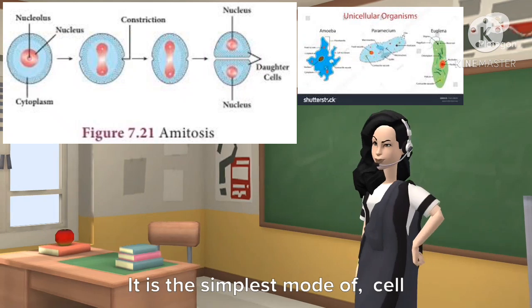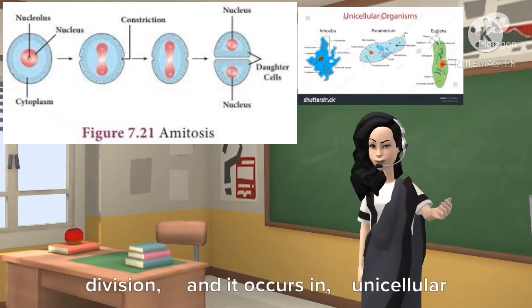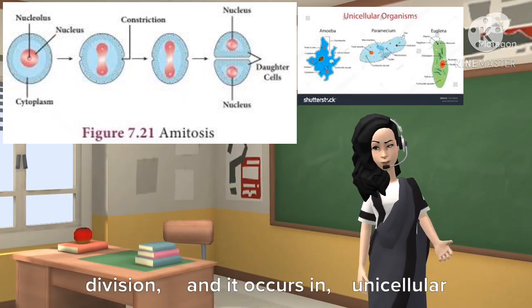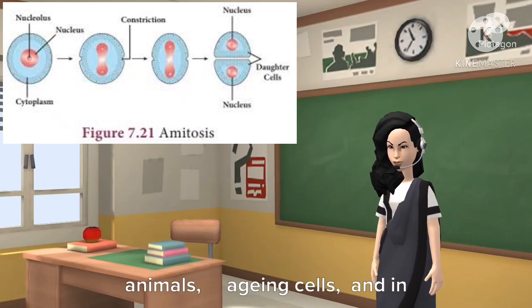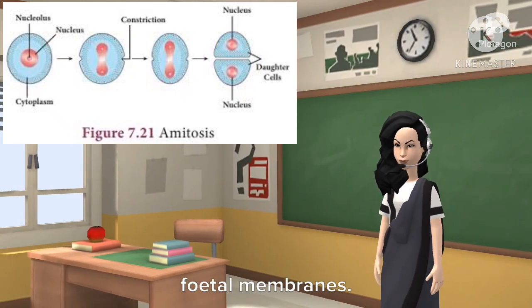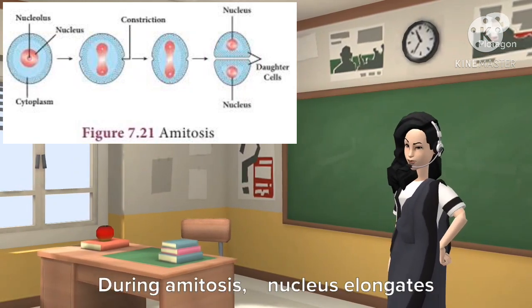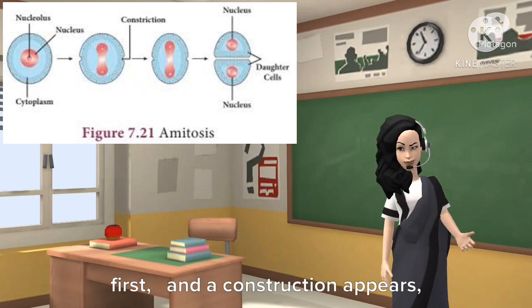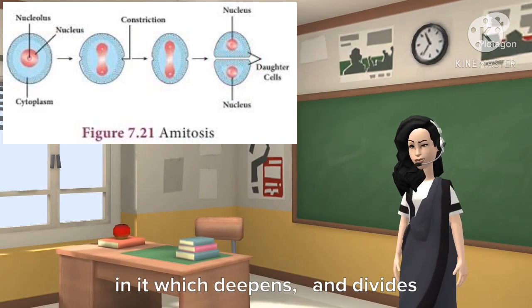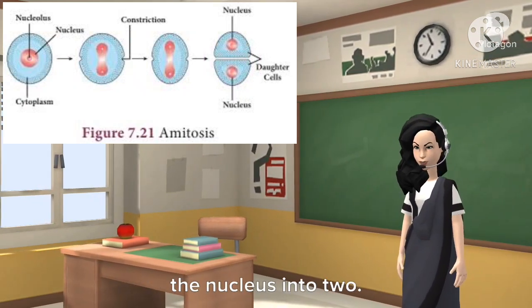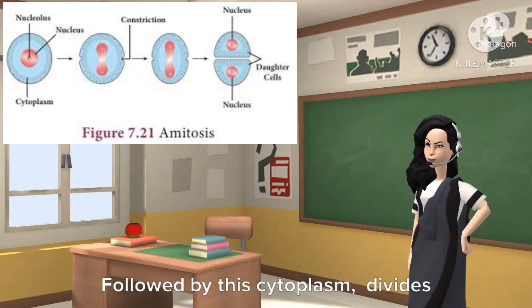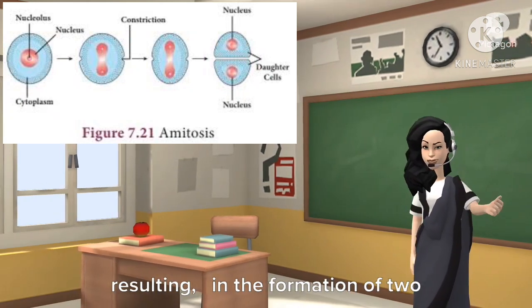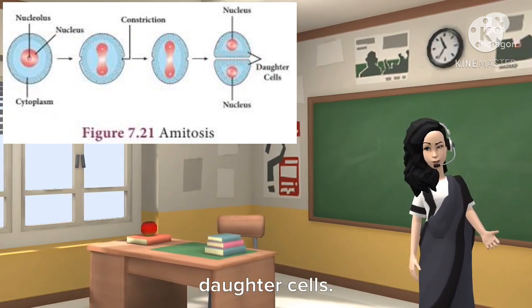Amitosis. It is the simplest mode of cell division, and it occurs in unicellular animals, aging cells, and in fetal membranes. During amitosis, the nucleus elongates first, and a constriction appears in it which deepens and divides the nucleus into two. Followed by this, the cytoplasm divides, resulting in the formation of two daughter cells.